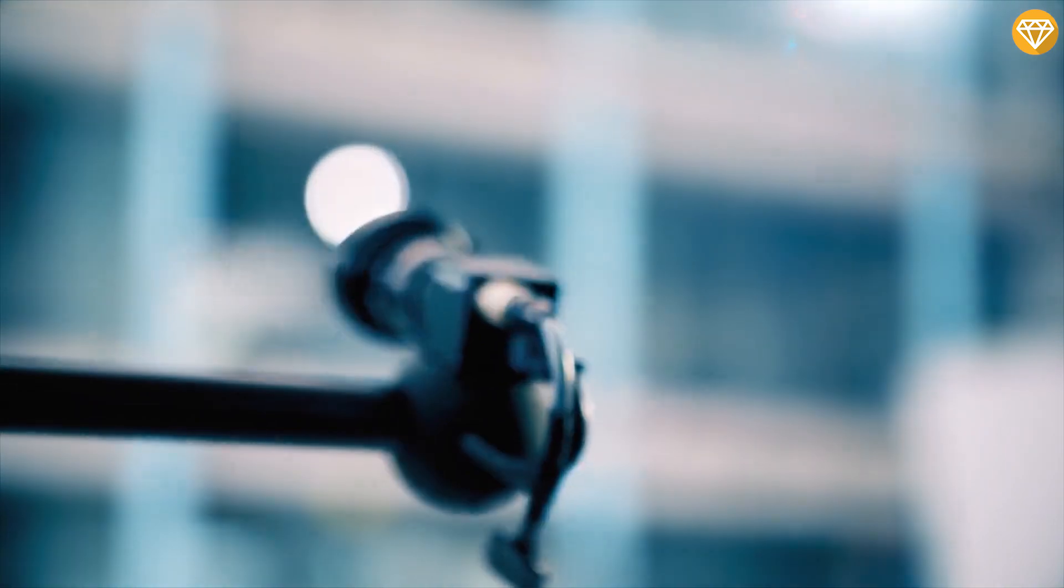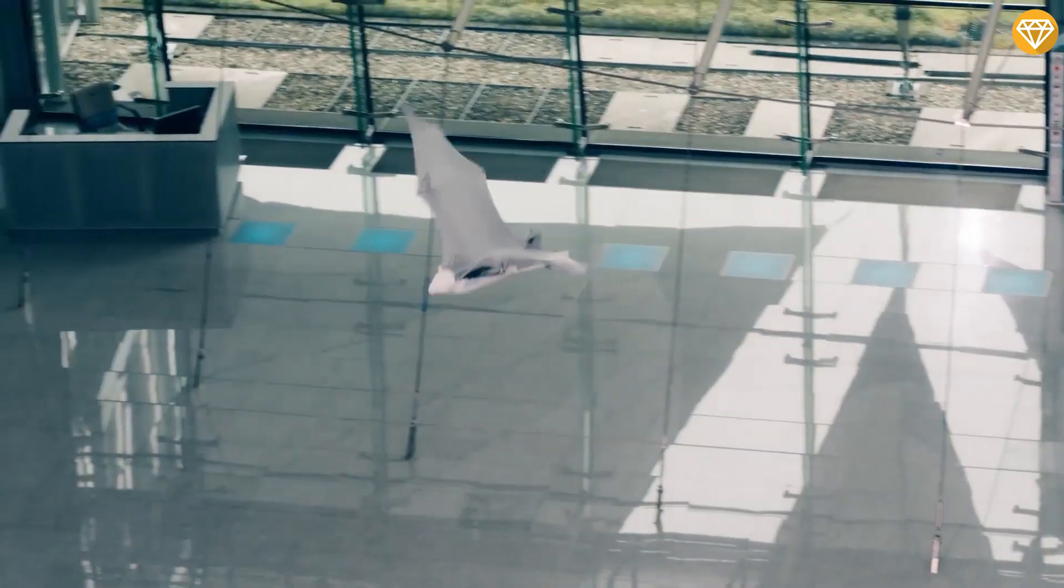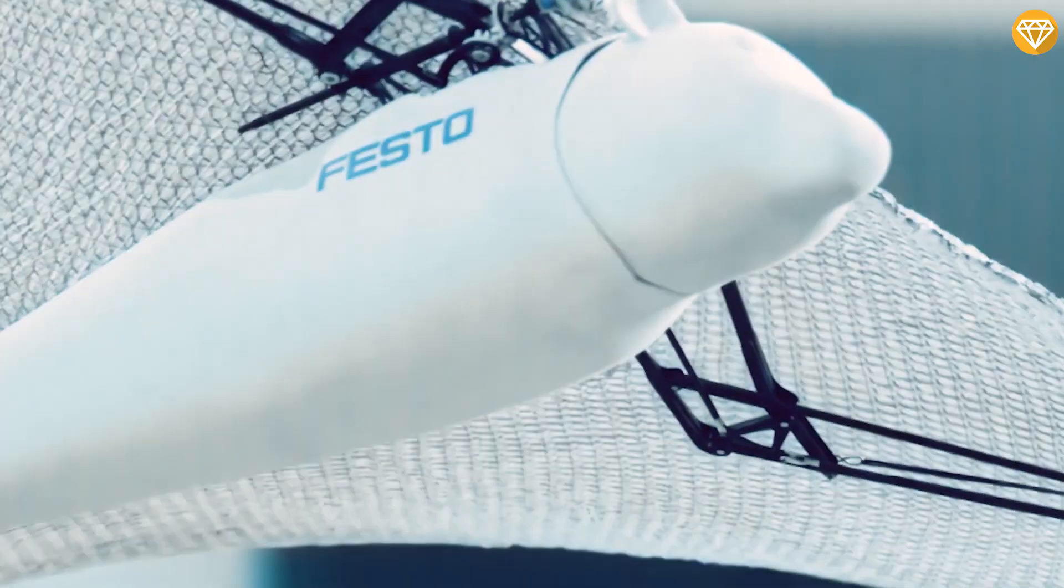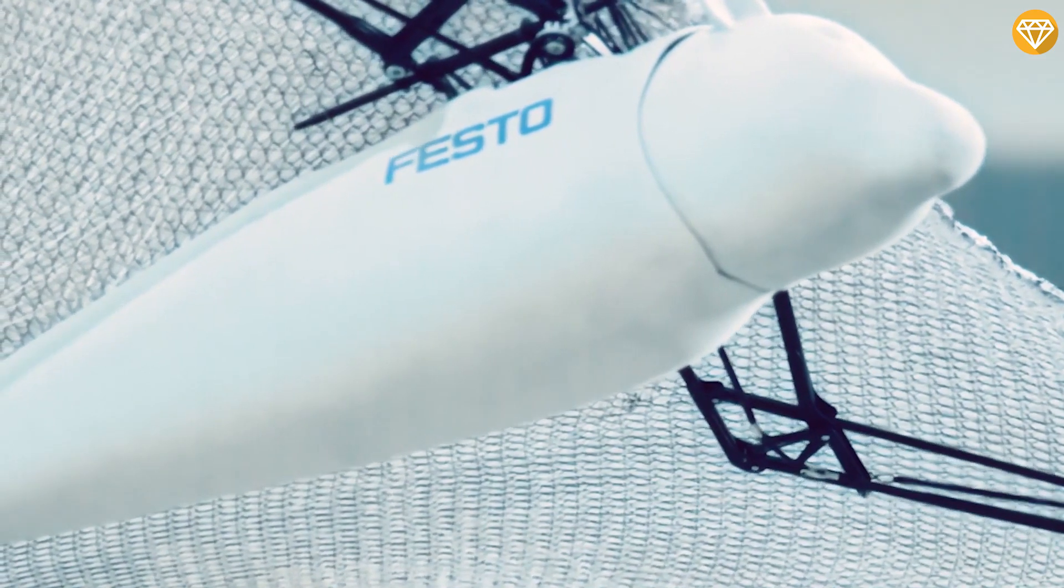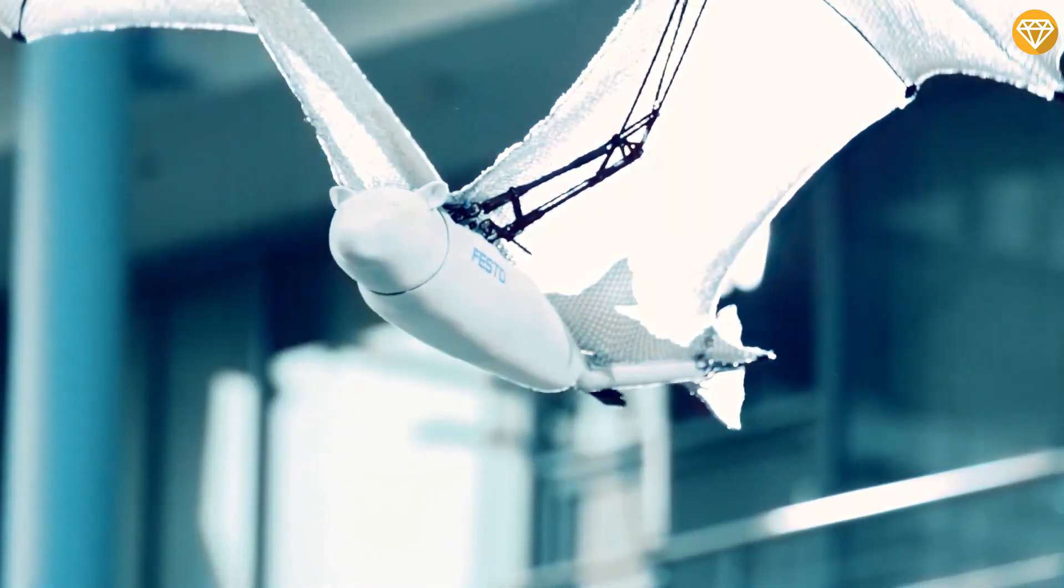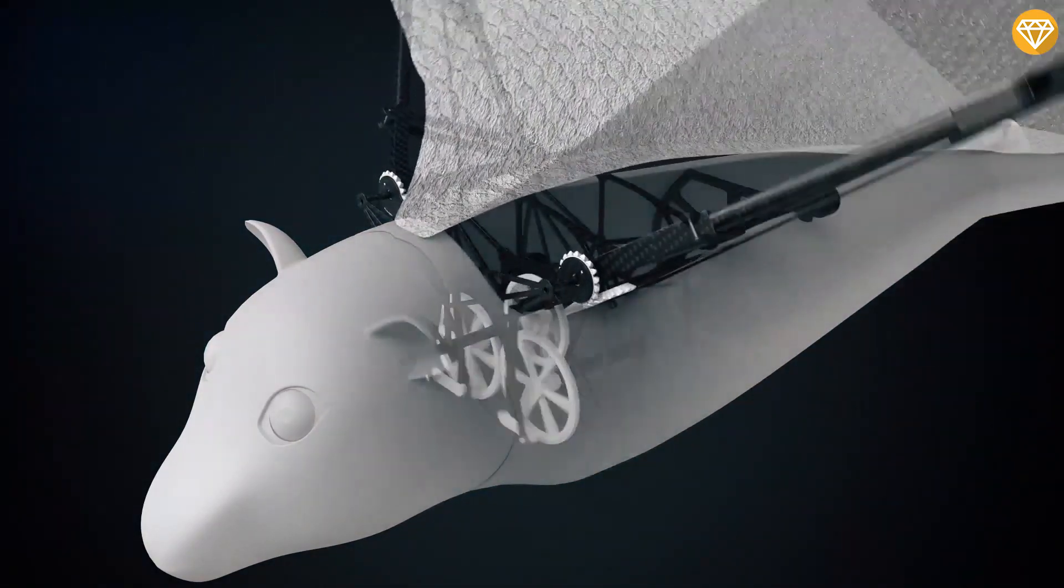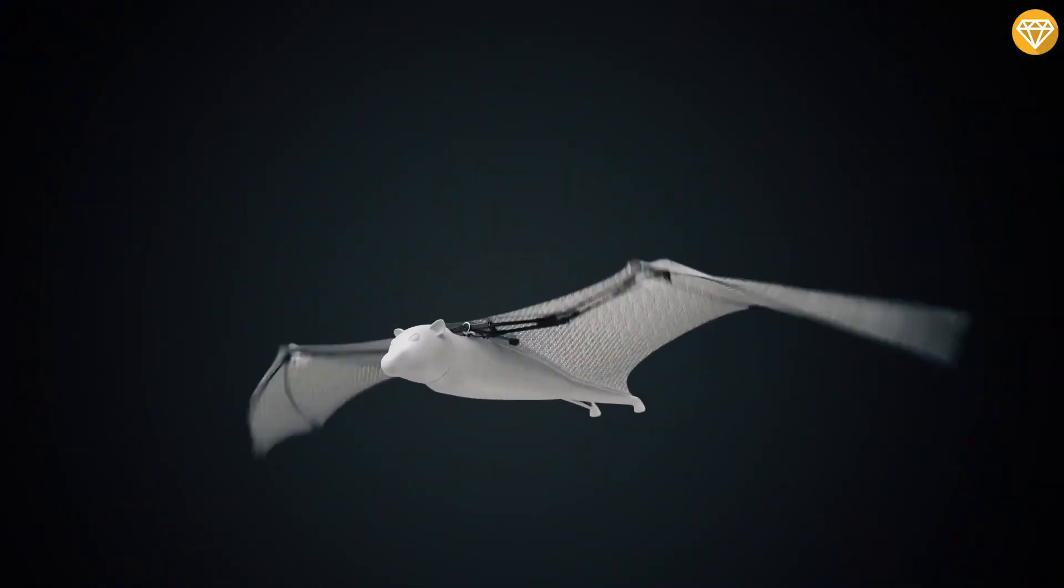The Bionic Flying Fox communicates with a motion tracking system, which allows it to fly semi-autonomously. The system detects and tracks the flying object's position, plans trajectories, and provides control commands. Take-off and landing are manually performed by a human pilot, while an autopilot takes over during flight.